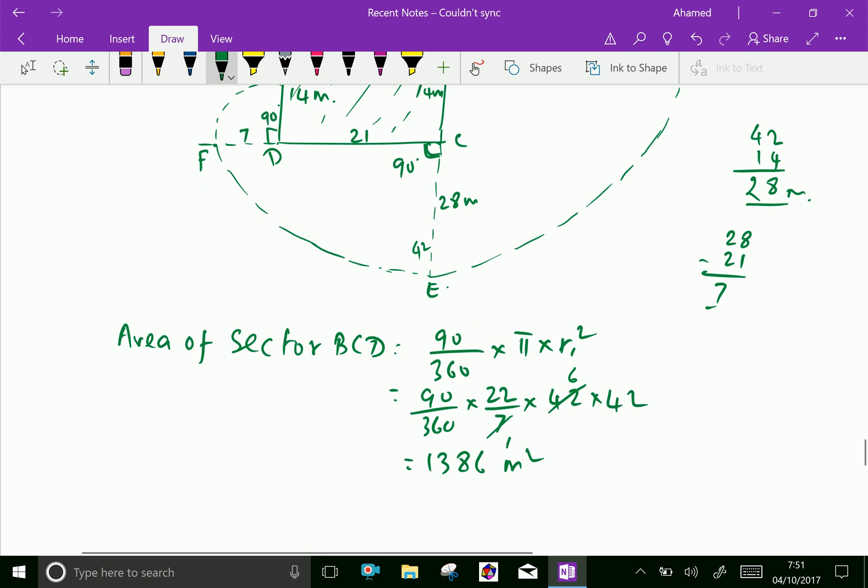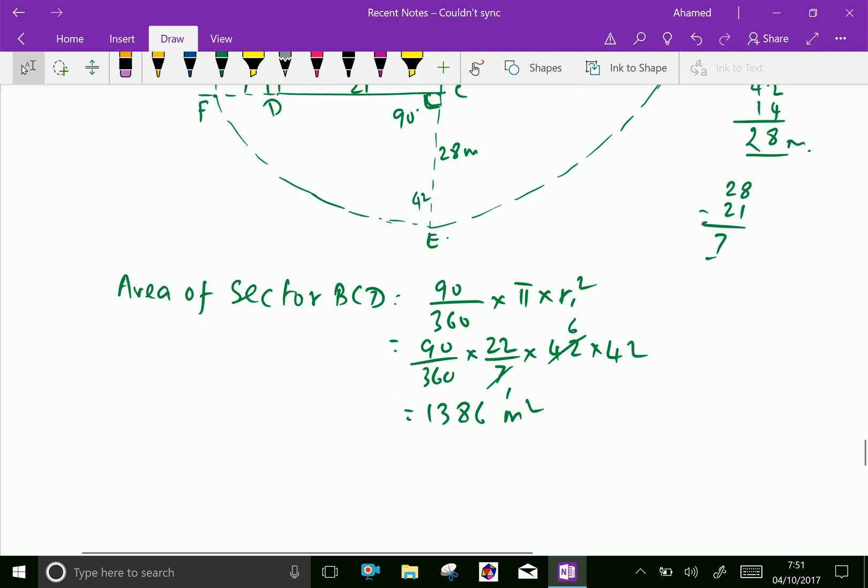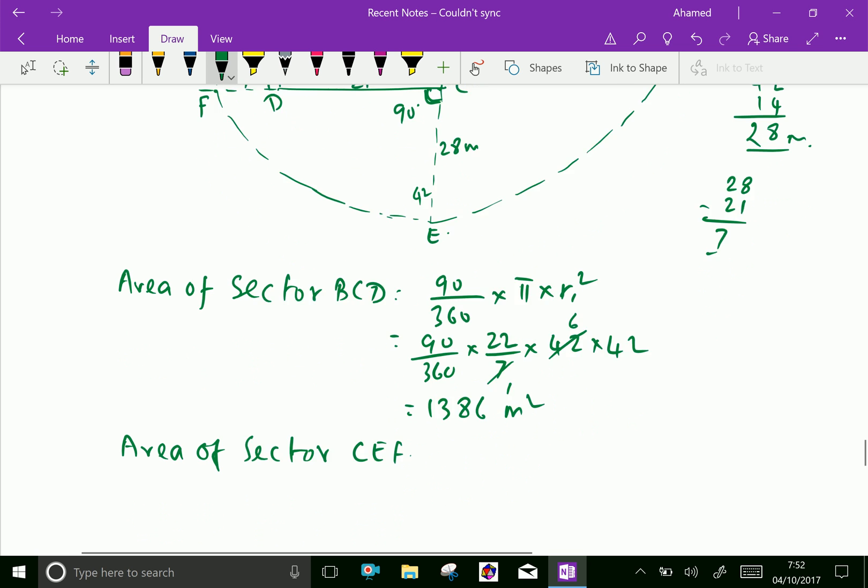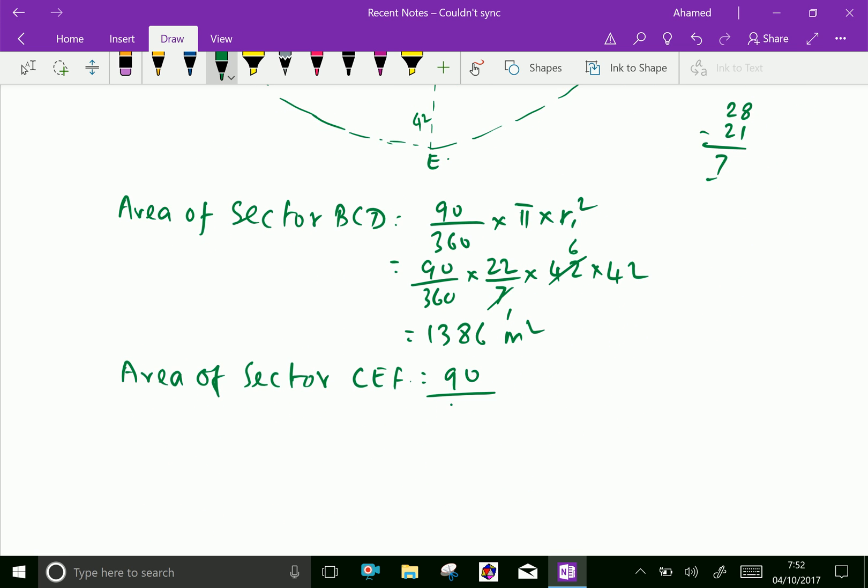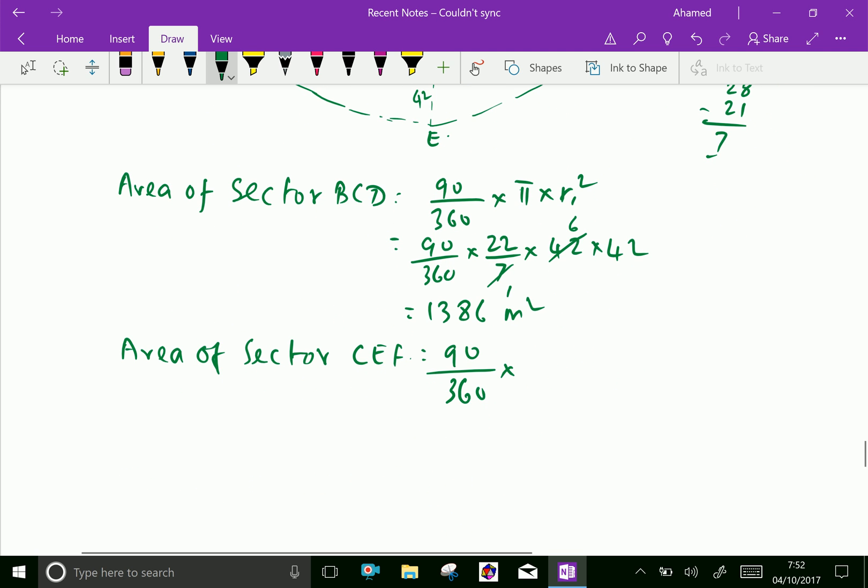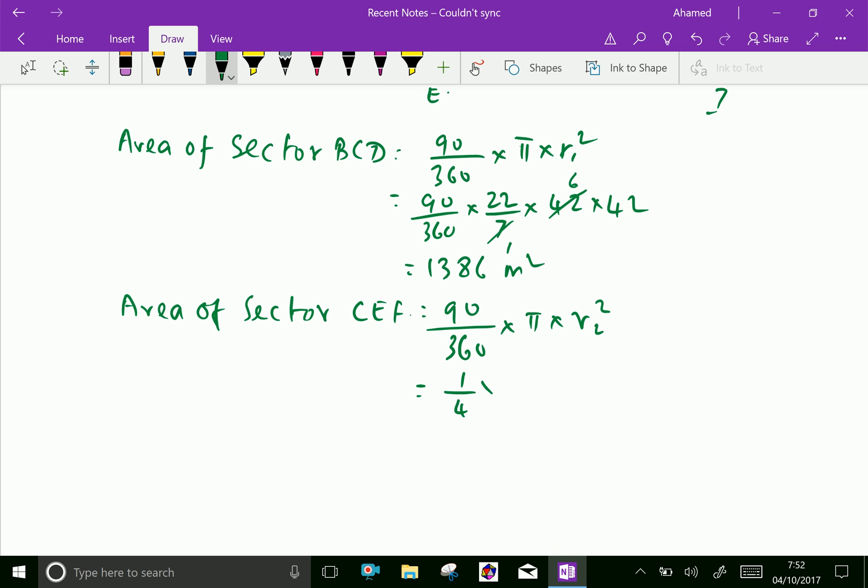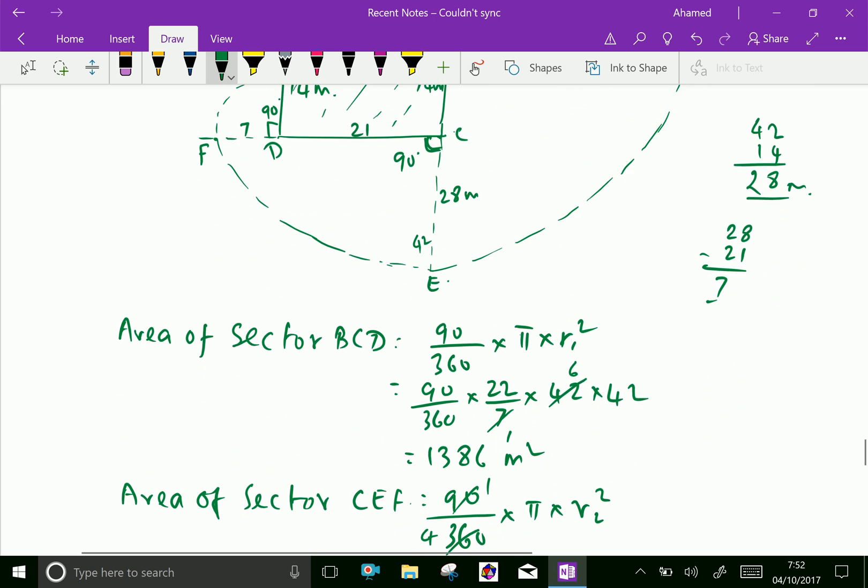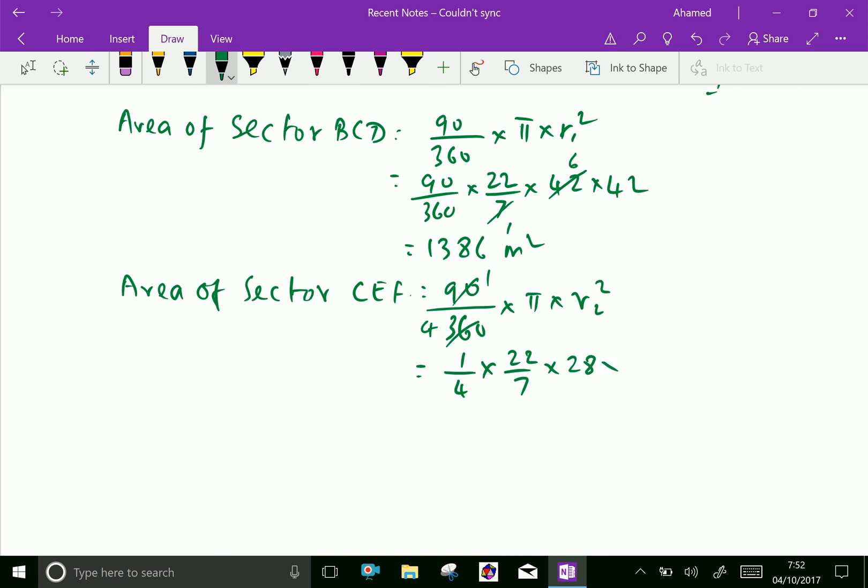Then the second sector CEF. Area of sector CEF having theta is 90 degrees over 360 into 22 by 7, that is pi R2 square. Here, we can write as 1 by 4, 22 by 7 into R2. Here, R2 is 28 from C to E. The distance is 28, 28 into 28.